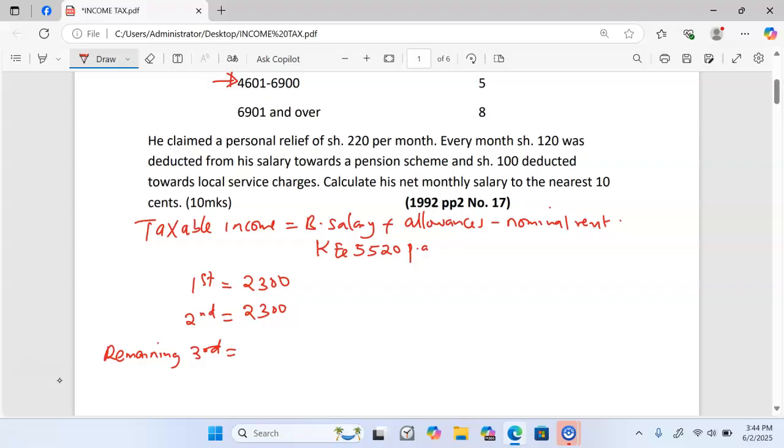For the third bracket where our money lies, we add what we have taxed in the first and second brackets: 2,300 plus 2,300. We subtract this from 5,520, which gives us 920.